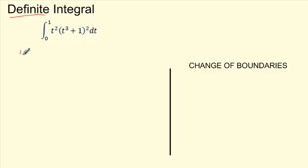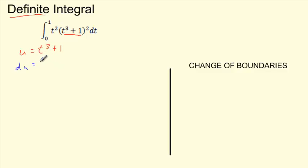Let's do our u-substitution. I look at the integral and to me, it's probably this part in the parentheses where I'm going to start. I'm going to say u equals t cubed plus 1. I'm not sure if that's right, but we're just going to see what happens — I kind of picked the most complicated thing. Take the derivative of that: du will be 3t squared dt. The one disappears. Do all these parts match up? Sure, I hope they do anyway.